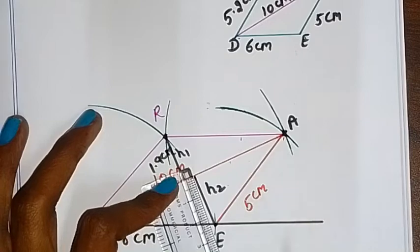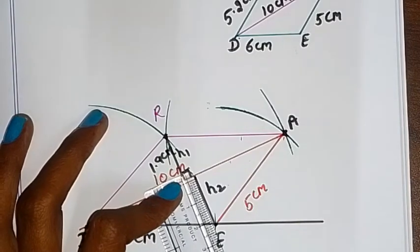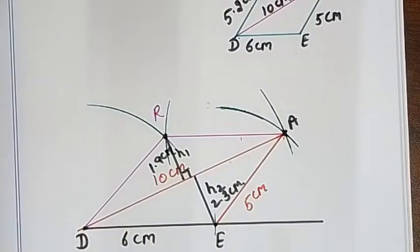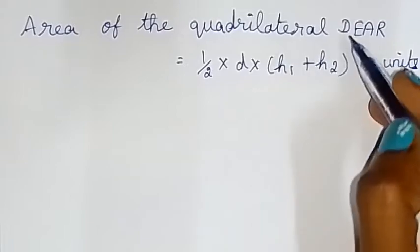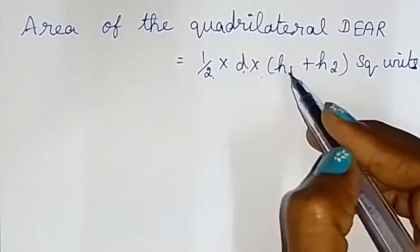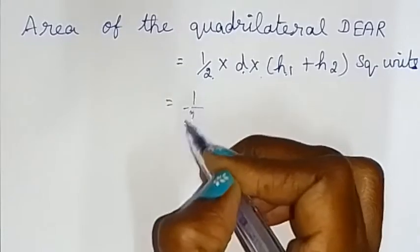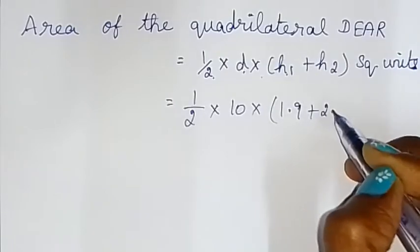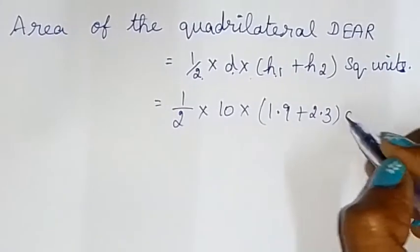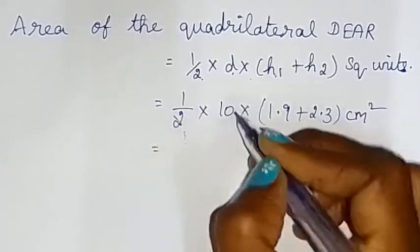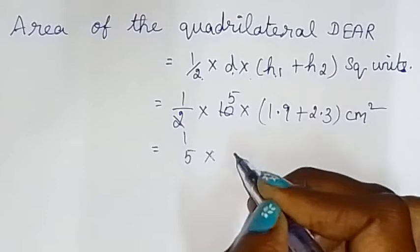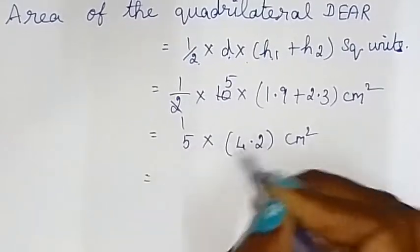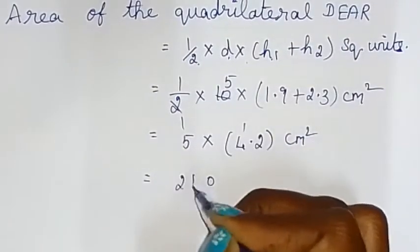Now we calculate the area of quadrilateral DEAR. Area = half × diagonal × (H1 + H2). That equals half × 10 × (1.9 + 2.3) = half × 10 × 4.2 = 5 × 4.2 = 21 centimeters squared. So 21 cm² is our required area.